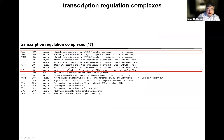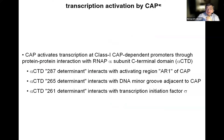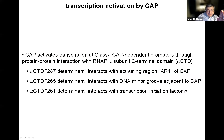Then, in 2002, again in a collaboration between my laboratory, the laboratory of Helen Berman, and also Kathy Lawson, we determined the structure of CAP bound to its functional target in a transcription initiation complex. In biochemical and genetic work, our lab had shown that CAP activates transcription at class 1 CAP-dependent promoters, such as the lac promoter, through protein-protein interaction with RNA polymerase alpha subunit C-terminal domain, alpha-CTD. Specifically, we had shown that the alpha-CTD region called the 287 determinant interacts with a surface of CAP called AR1.